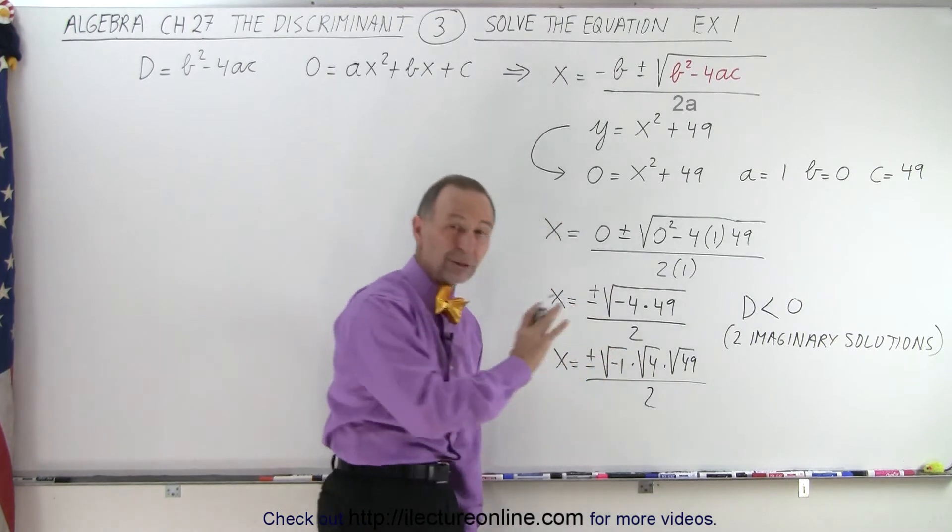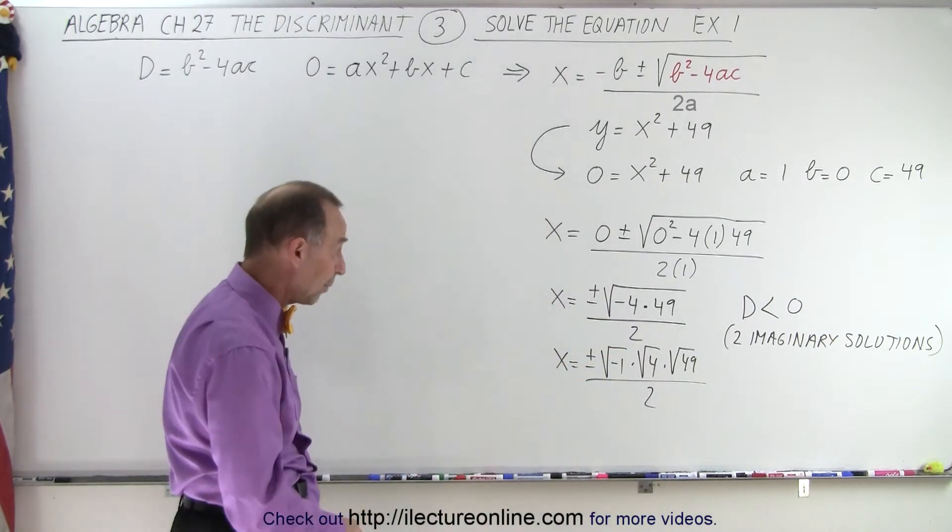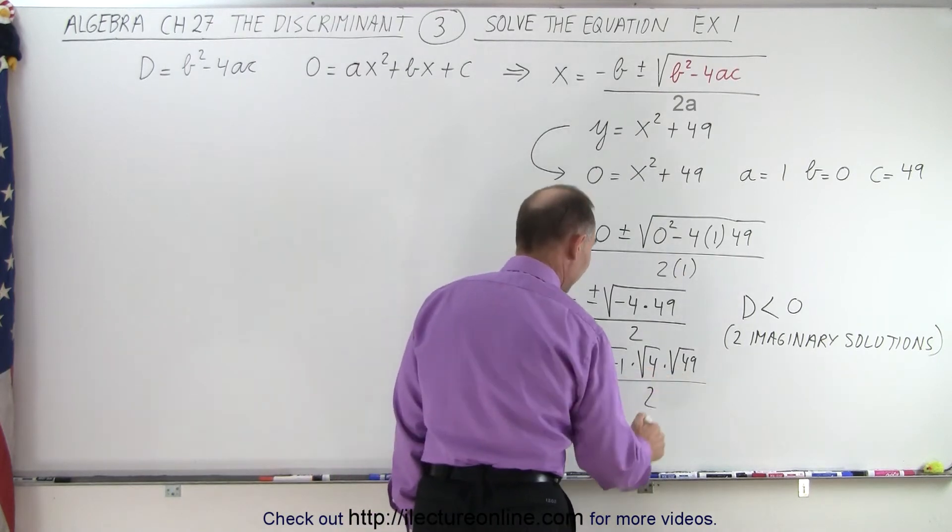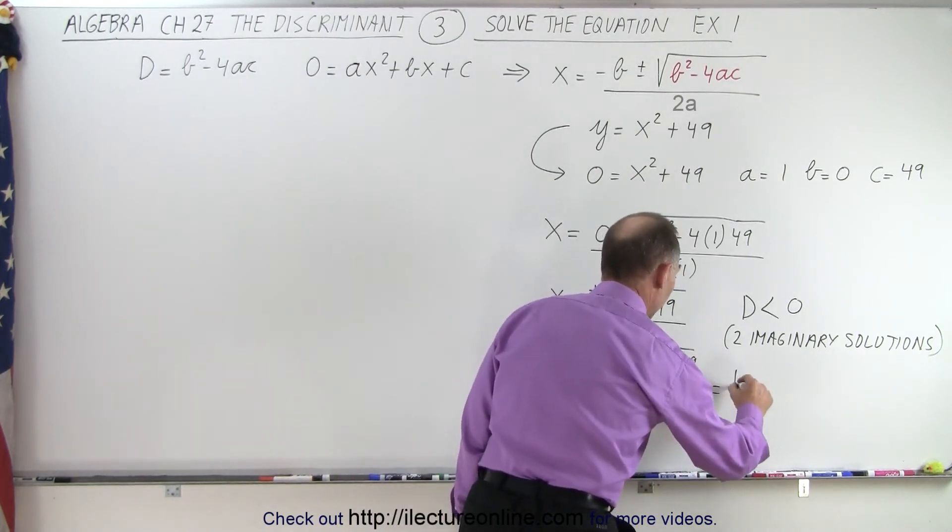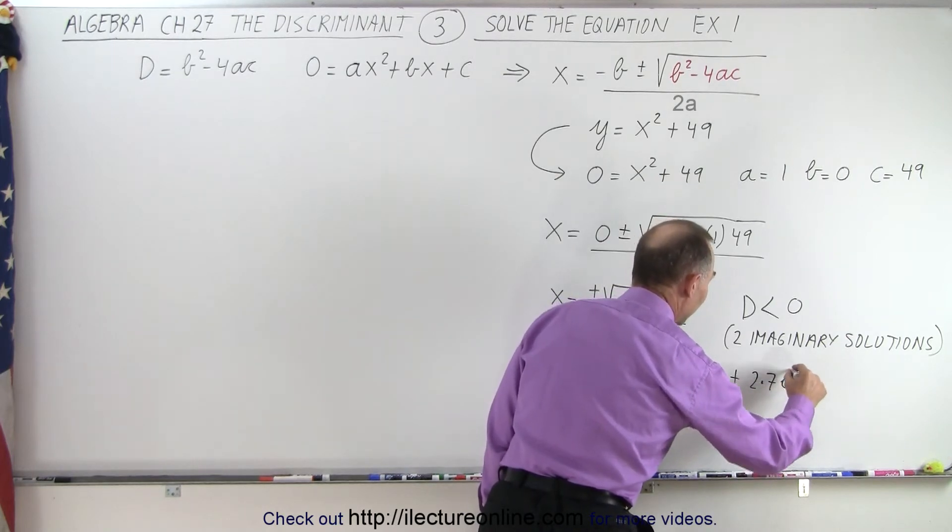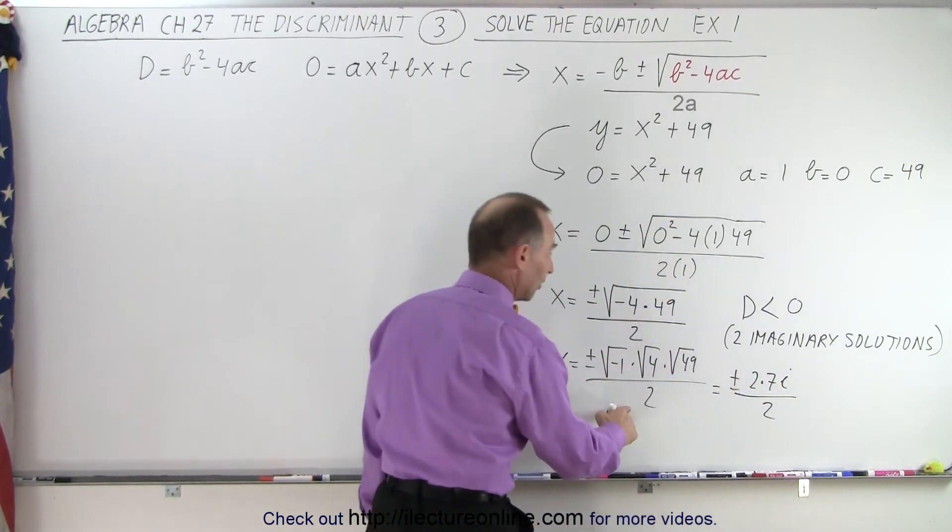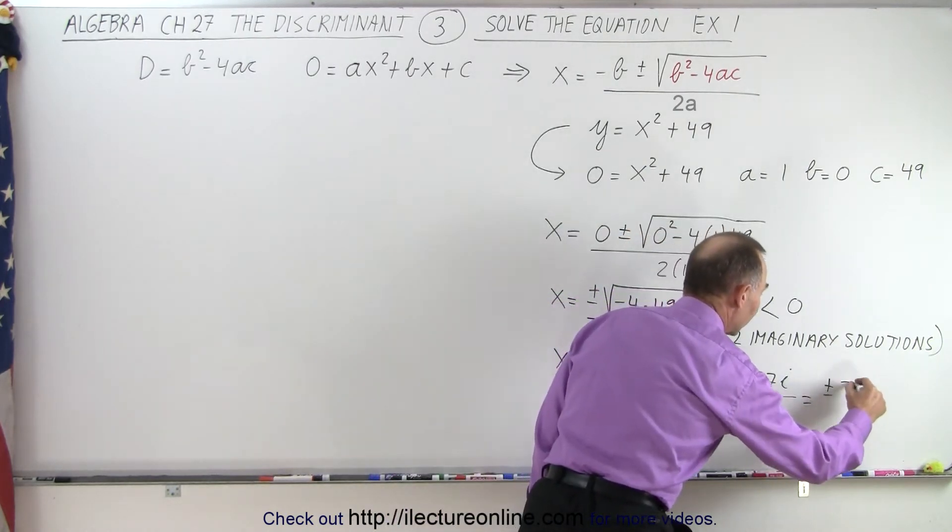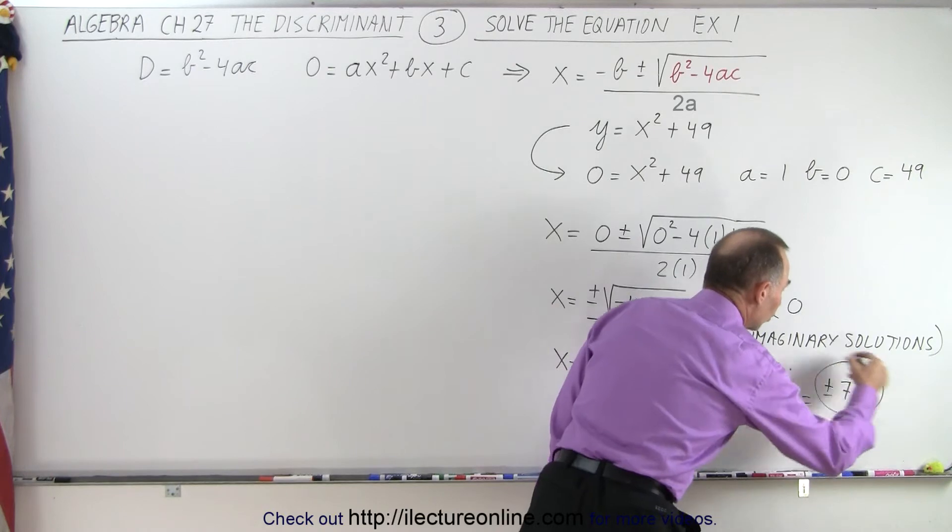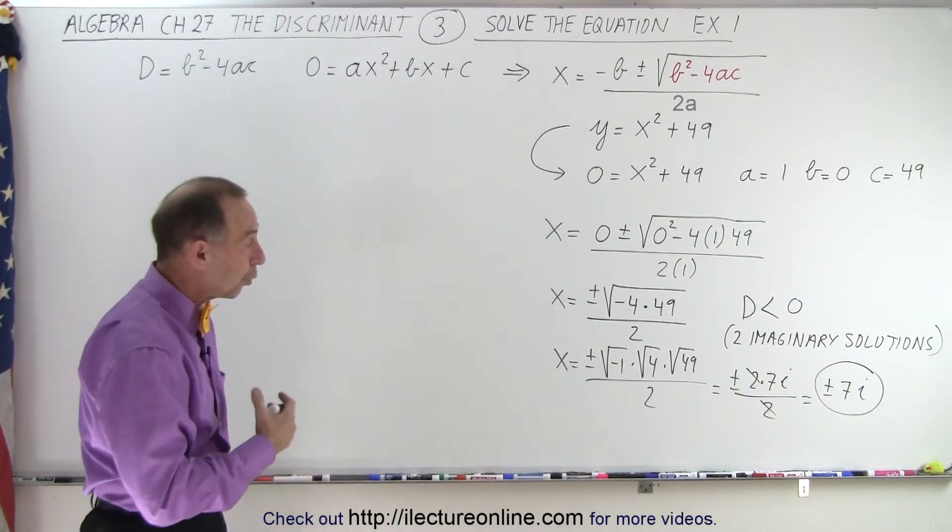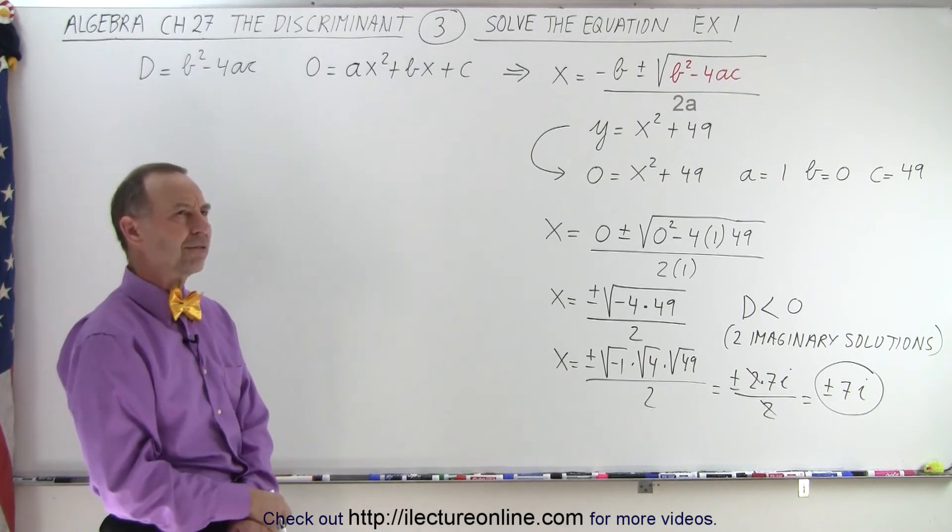I don't have to do it like that, but it's nice to see how we can easily take the square roots. √(-1) = i, √4 = 2, and √49 = 7. So this equals ± (2 × 7 × i)/2. The 2 cancels out, giving us x = ± 7i.